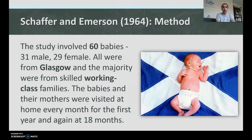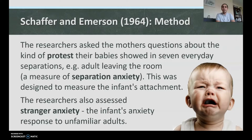The study involved 60 babies — 31 male, 29 female — all from Glasgow, and the majority were from skilled working-class families. The babies and their mothers were visited at home every month for their first year and again at 18 months. The researchers asked the mothers questions about the kind of protest their baby showed in seven everyday separations.